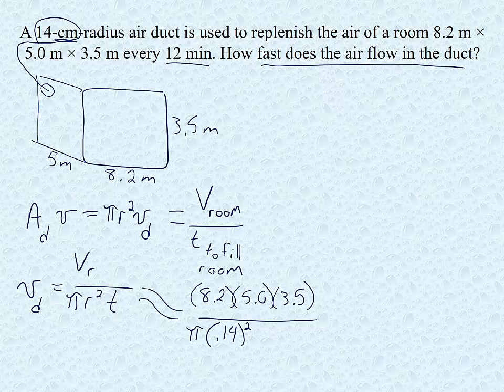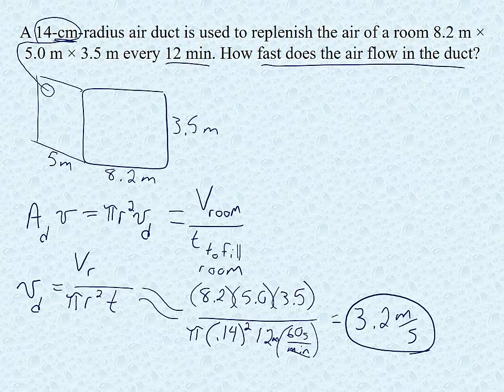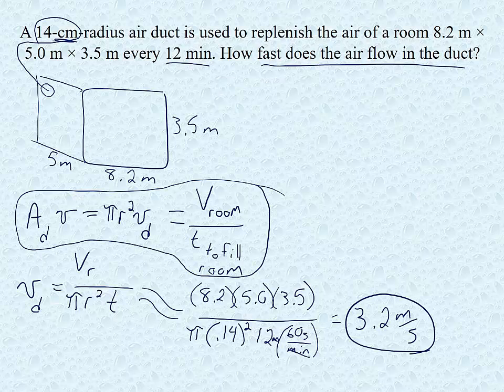The time is 12 minutes. And we have to change the 12 minutes to seconds. So I'm going to multiply it by 60 because then the minutes will go away. And if we plug that into our calculator, we find out that the air flow in the duct is 3.2 meters per second. And this again all comes because the equation of continuity allows us to look at it as a flow rate, a volumetric flow rate of the fluid. Let's do another one.